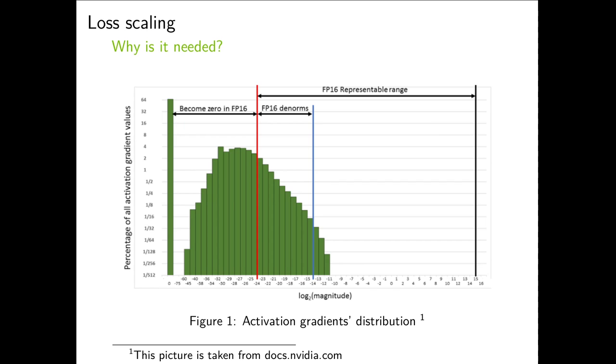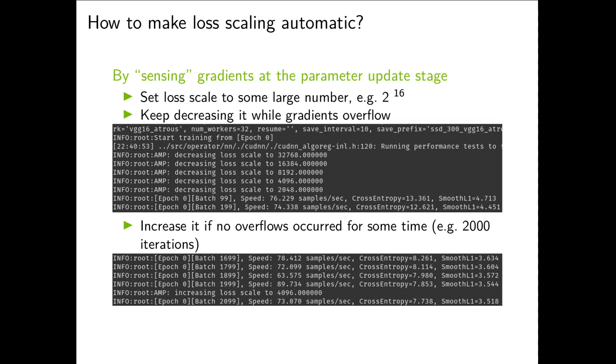Some models can be trained with a fixed scale, but different models may require different scales, and even one model can need this loss scale to be adjusted as training progresses. For example, as gradients become smaller. So ideally we want to handle it automatically. How do we do that? We do it by sensing gradients at the parameter update stage. Initially we set scale to some large number like 64k, and then we keep decreasing it while gradients overflow. And then as training progresses, if we observe that there were no overflows for a number of iterations – for example 2000 iterations – we increase our loss scale. And that works pretty well most of the time.